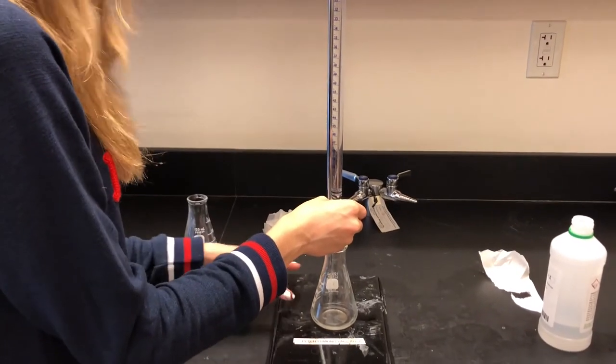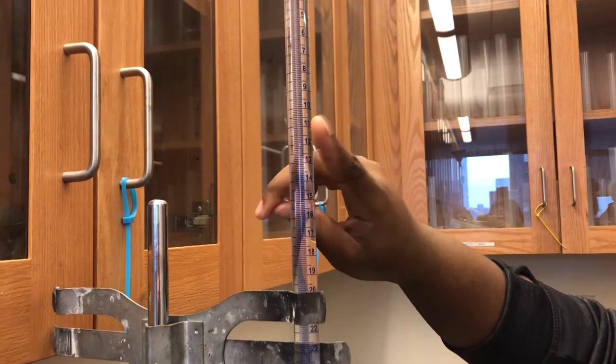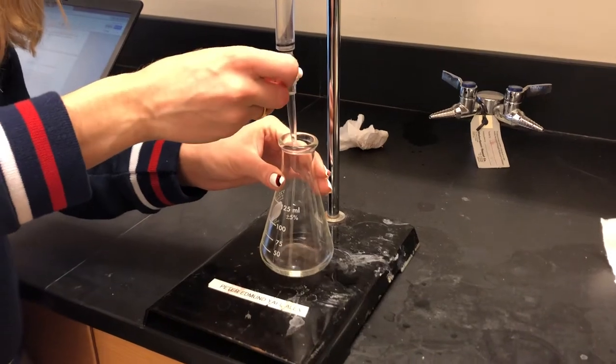If you pour too much, take another flask and turn the stopcock to let a little bit of the liquid come out. If there are air bubbles, tap the side of the burette until they're gone. Now it's time to do the titration.